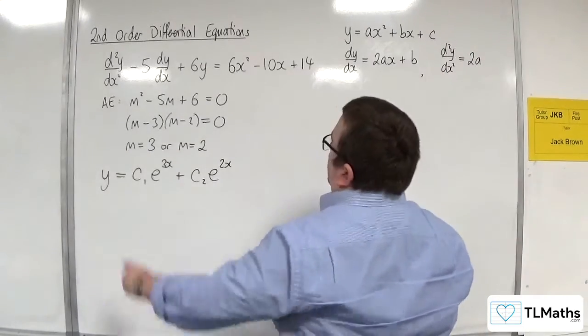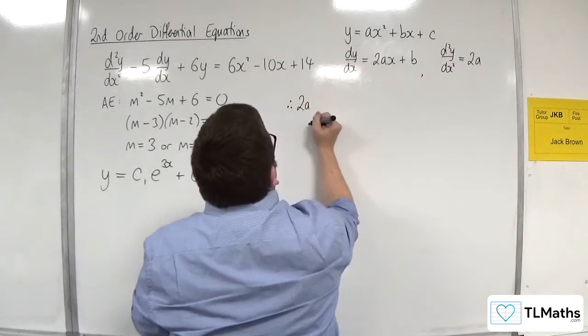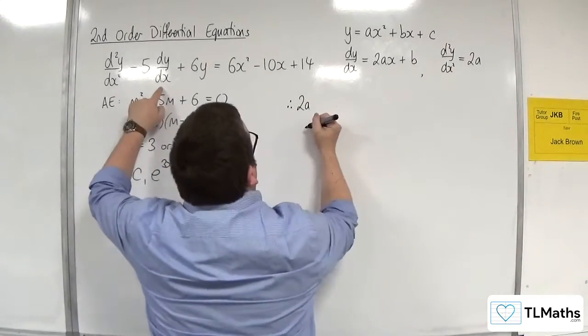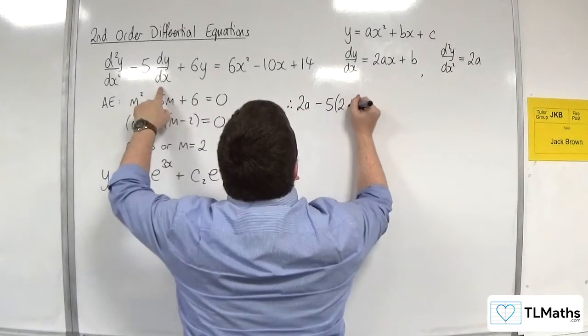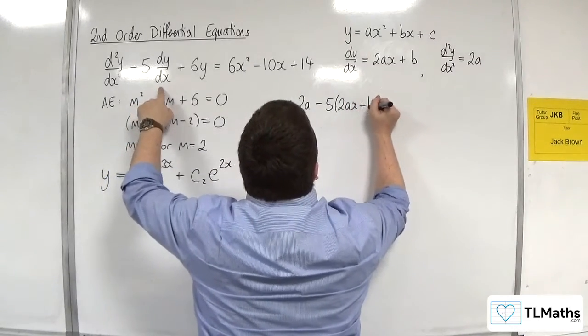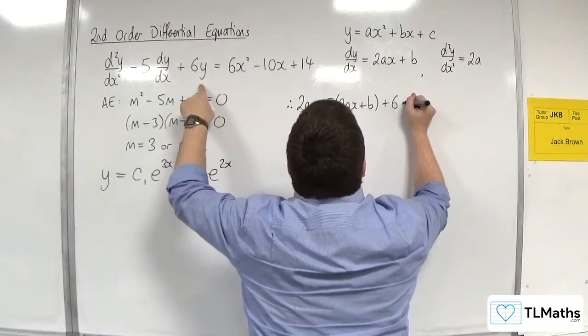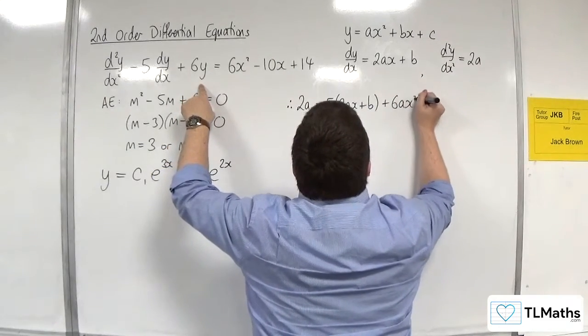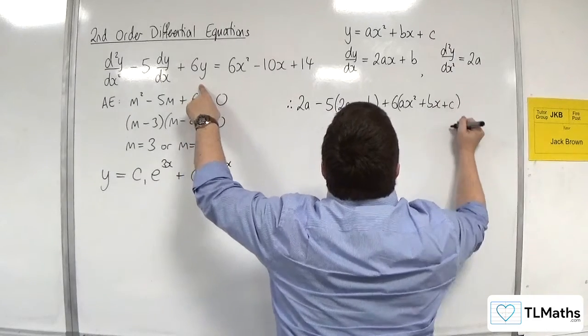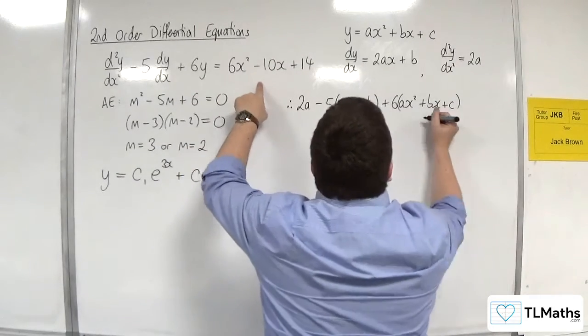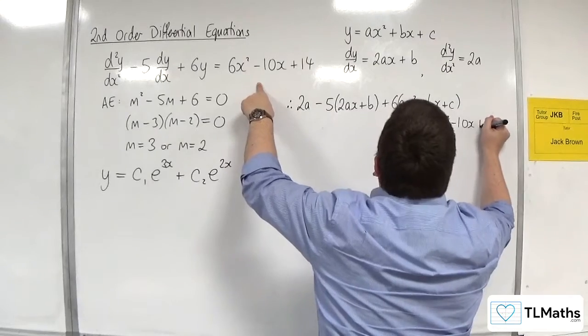So we're going to substitute it in. We get 2a, take away 5 lots of dy/dx, so take away 5 lots of 2ax plus b, plus 6 lots of y. So plus 6 lots of ax squared plus bx plus c. And this has got to be equal to 6x squared, take away 10x plus 14.